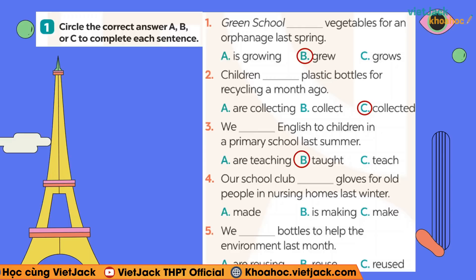Number 4: dấu hiệu nhận biết là last winter (mùa đông năm trước). Quá khứ của make sẽ là made: Our school club made gloves for old people in lasting homes last winter — câu lạc bộ của trường chúng tôi đã làm những cái bao tay cho người già ở trong viện dưỡng lão vào mùa đông năm trước. Number 5: dấu hiệu nhận biết là last month (tháng trước). Quá khứ của reuse — từ có quy tắc — sẽ là reused: We reused bottles to help protect the environment last month.